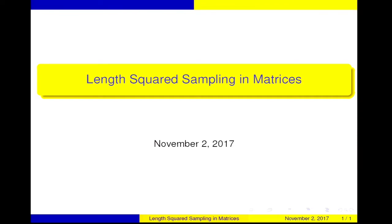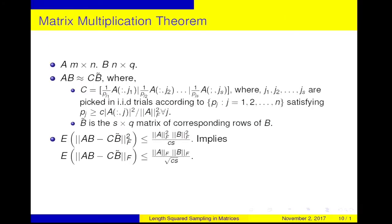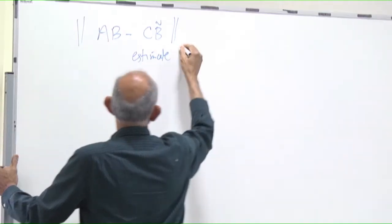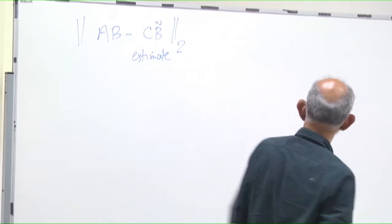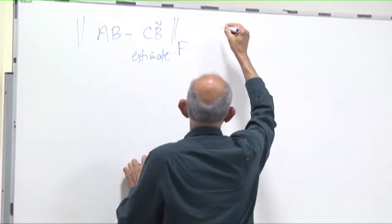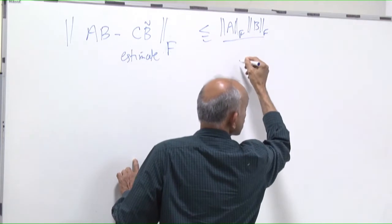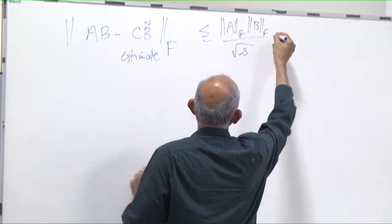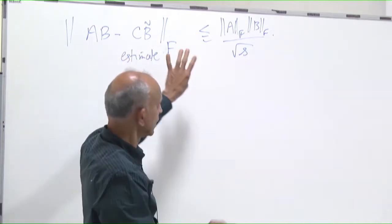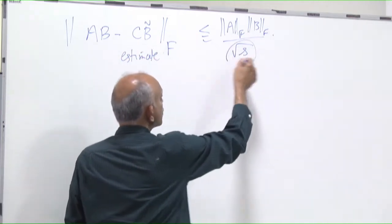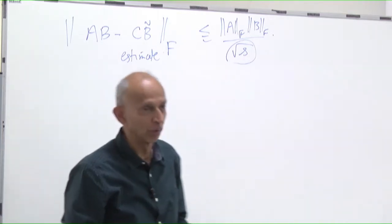So we'll start. I did do length squared sampling, that is already done. So that's the matrix multiplication theorem. I'll put this up and then we'll use it for the compressed representation of a matrix, which we went through fast. We'll go through this carefully. So I take AB, I want to find this product. This is the estimate — the Frobenius norm. So for the multiplication, the error is less than or equal to one over square root of s. If I pick s samples to multiply, the error goes down as one over root s.